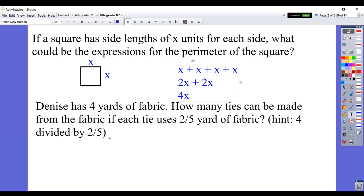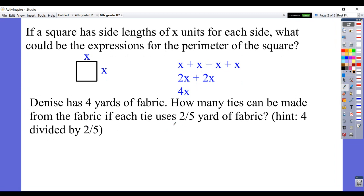Another type of question would be this. Denise has 4 yards of fabric. How many ties can be made? Each tie uses 2 fifths yards of fabric. So we're supposed to take 4 and divide by 2 fifths. So again, remember that we would write our whole number over a denominator of 1. And then we would go through our keep change flip process, keeping the fraction 4 over 1 as is, changing our division sign to multiplication, and flipping, or using the reciprocal, in other words, of the second fraction.